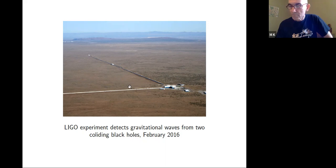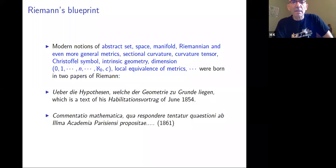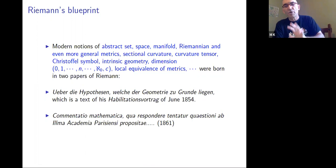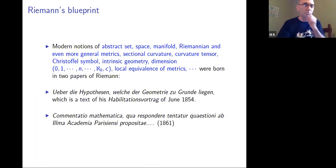Maybe to understand our situation, it's a good idea to compare it with the situation in the 19th century. I want to take a historical point of view to tell you how things started. We are following Riemann's blueprint. Riemann wrote two papers on differential geometry. The second paper is much less known — it's in Latin, submitted as his entry into a prize competition by the Paris Academy.